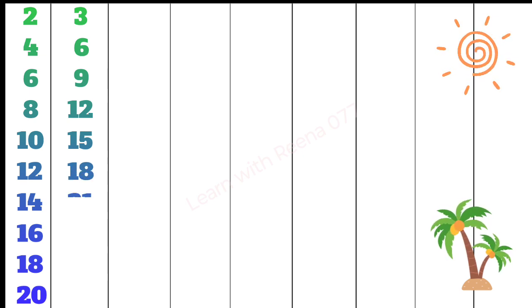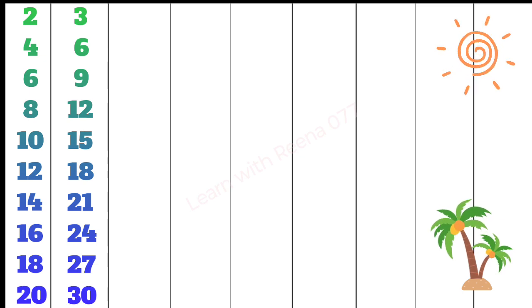3 6s are 18, 3 7s are 21, 3 8s are 24, 3 9s are 27, 3 10s are 30.